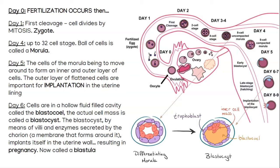At about day eight or nine, we call this structure a blastula. We are going to take this picture and label it. Your picture in your notes is a little bit different, so follow along with me labeling it. Make sure you have all of the information from day one to six written down.